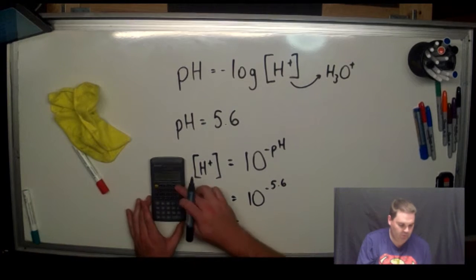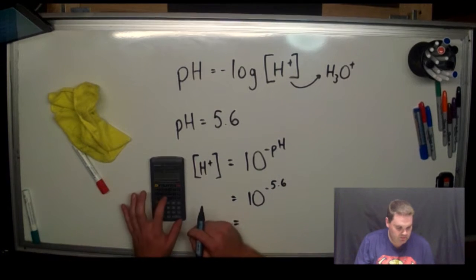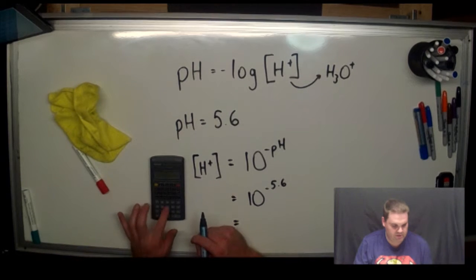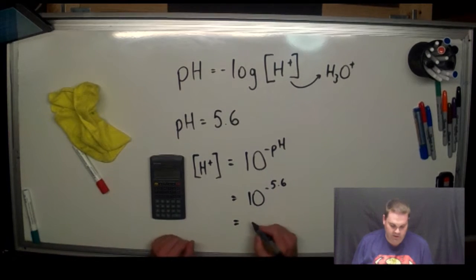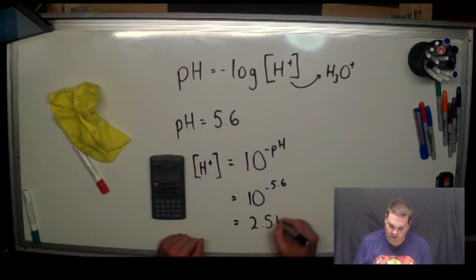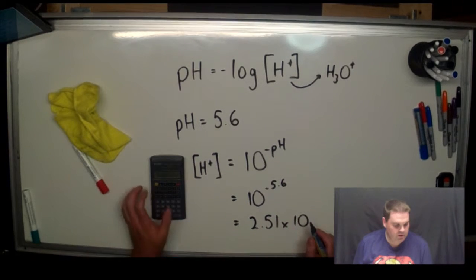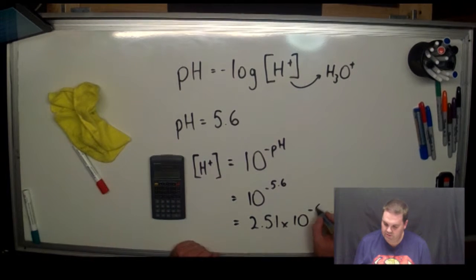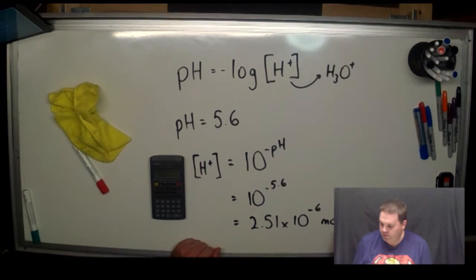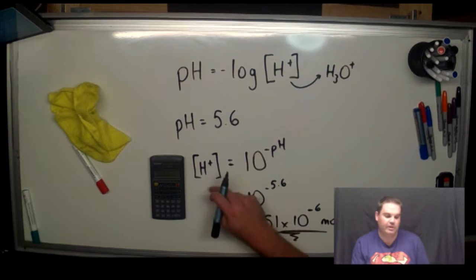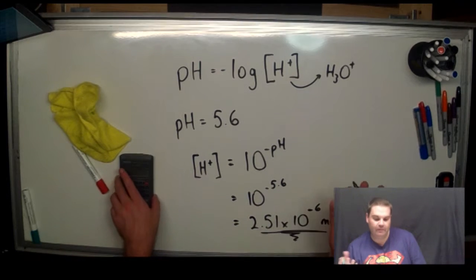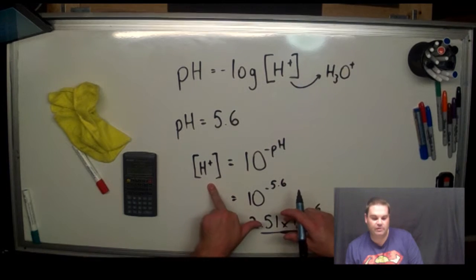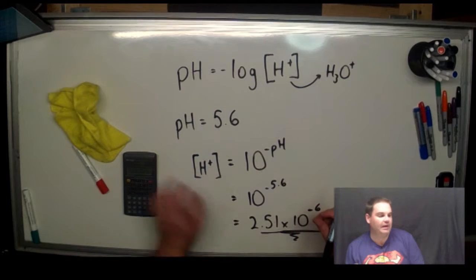So the concentration of H+ is going to be 10 to the negative 5.6. If you put that in your calculator, 10 to the power of negative 5.6, we're going to end up with 2.51 times 10 to the negative 6 moles per litre. You must put your units in here for concentration for H+. pH didn't have units, but concentration does. So if you want to go backwards and work out concentration of H+, you go 10 to the negative pH.